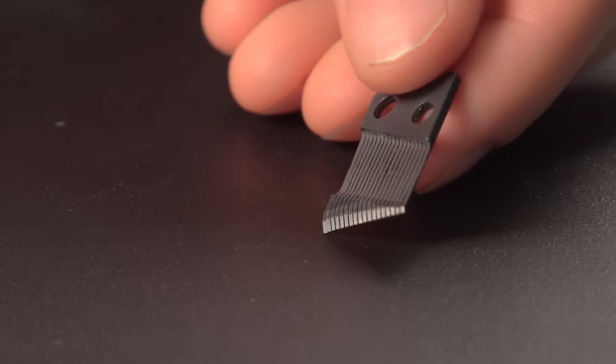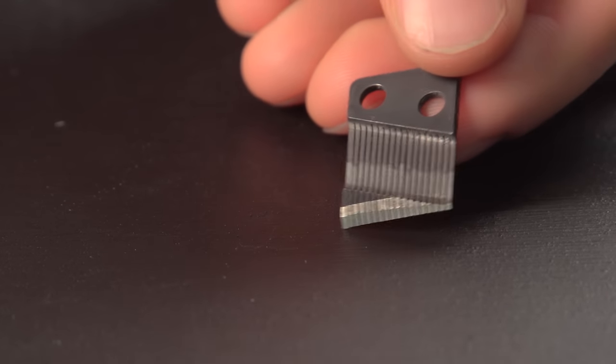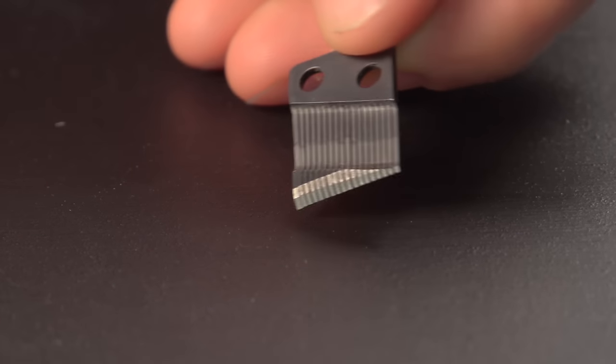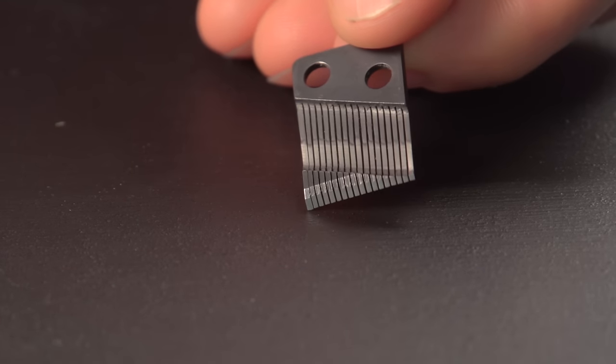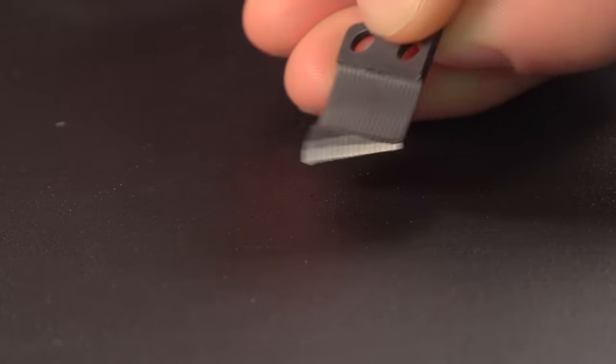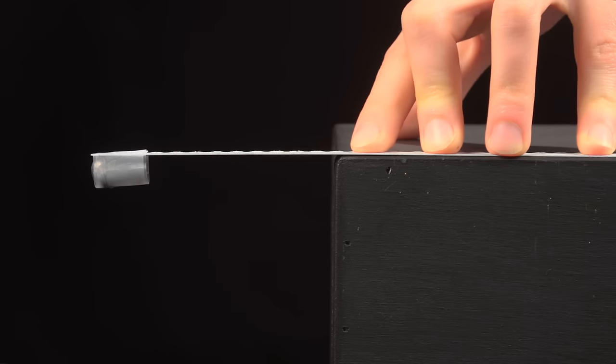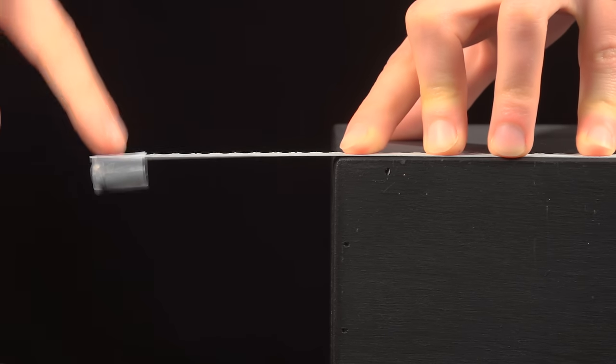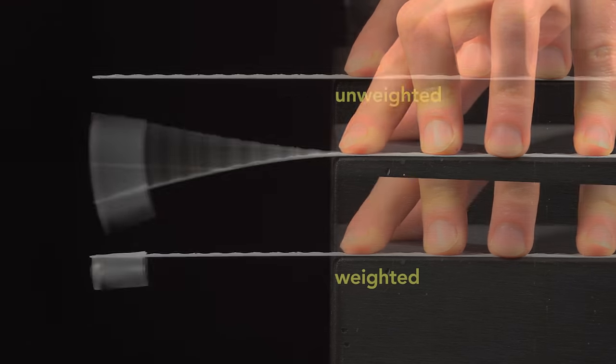Notice when you turn the comb over, the teeth don't have the same thickness. The longer teeth, the lower notes, are weighted more on the ends. This added weight lowers their resonant frequency even farther. Here, I taped a lead weight to the end of the saw blade, and it produces a lower note than without the weight.